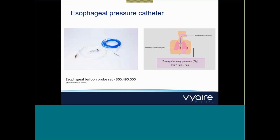We use an esophageal pressure catheter with a balloon that fits in the distal part of the esophagus. The balloon sits in the retrocardiac space, and it has been passed either orogastrically or nasogastrically, like you would with any other NG tube.